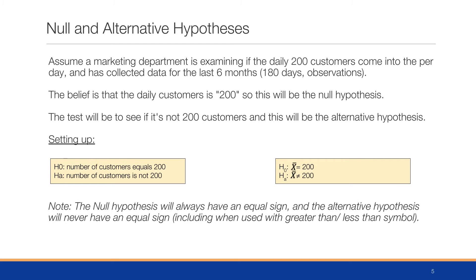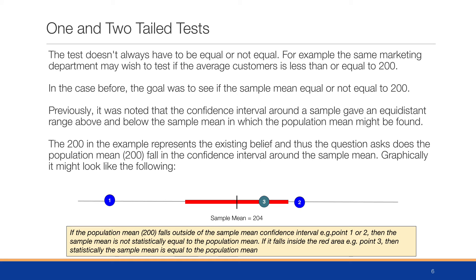Please note that the null hypothesis will always have an equal sign, and the alternative hypothesis will never have an equal sign. This includes when doing greater than or less than comparisons — 'greater than or equal to' goes in the null hypothesis, and 'equal to' goes in the null hypothesis, and so forth.